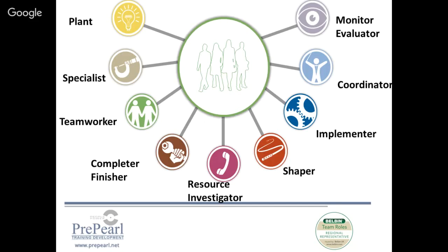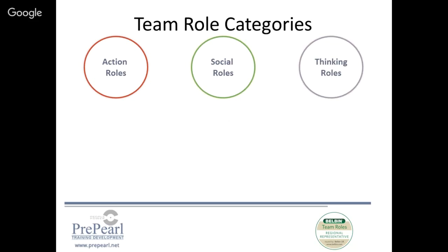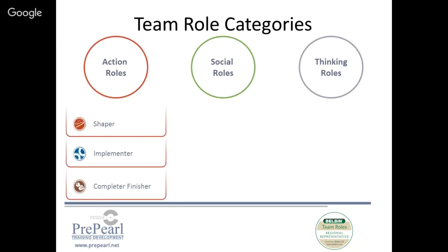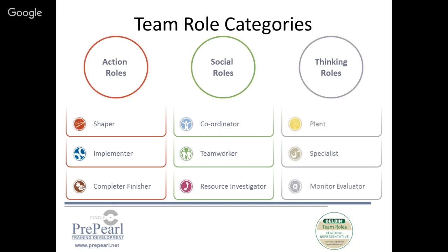This led to the realization of certain clusters of behavior important for team success. These clusters are today what are known as the Belbin team roles — the nine team roles. There are three categories: action, social, and thinking. The action roles are Shaper, Implementer, and Completer Finisher. The social roles are Coordinator, Team Worker, and Resource Investigator. And the thinking roles are Plant, Specialist, and Monitor Evaluator.